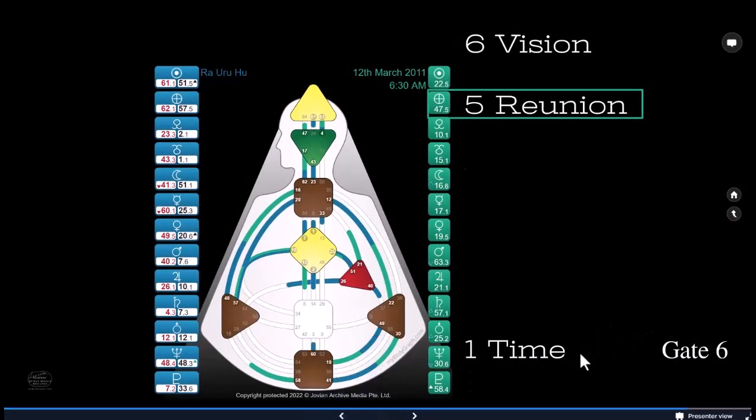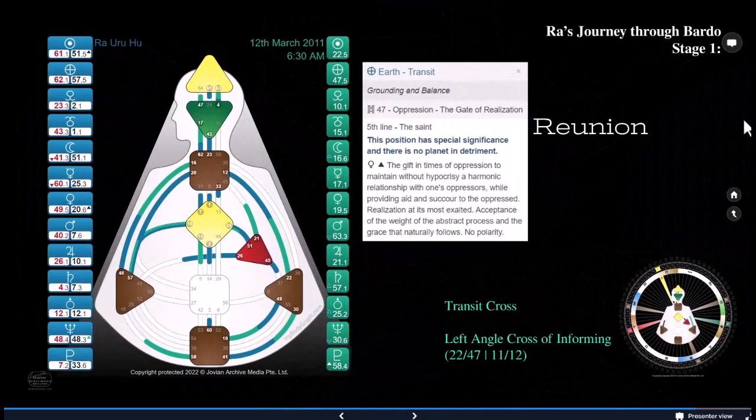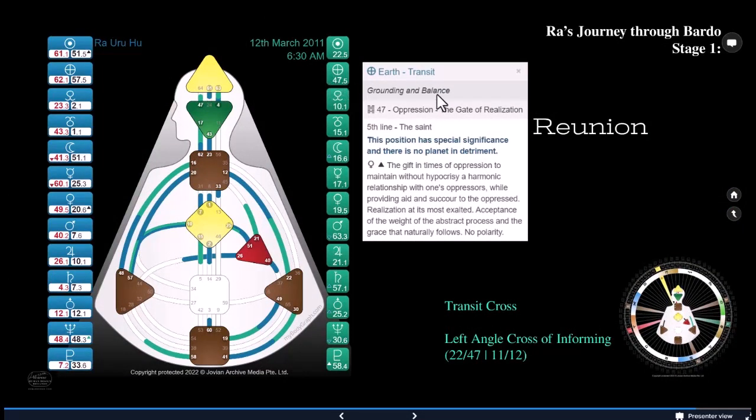So here, whoops, I clicked too many times. Here you only get three in a row. Here we have the situation of the earth in the fifth line, and the sequence is reunion, and then vision, and then time. Okay. Reunion, vision, and time. Or Ra, anyway, his sequence. So here's the reunion. 47.5, earth, the saint. This position has special significance in that there is no planet in detriment. Here's Ra's journey through the bardo stage one. Venus exalts the gift in times of oppression to maintain without hypocrisy a harmonic relationship with one's oppressors while providing aid and succor to the oppressed. Realization at its most exalted. Acceptance of the weight of the abstract process and the grace that naturally follows. Here we have no polarity.